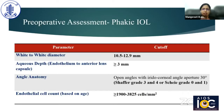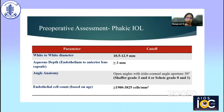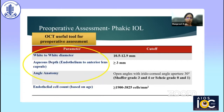The parameters important pre-operatively are the white-to-white diameter and aqueous depth from endothelium to anterior lens capsule, which are most important for determining phacic IOL size. Cutoffs are based on the model used. Additionally, open angles are required with an iridocorneal angle aperture of at least 30 degrees and adequate endothelial cell count.